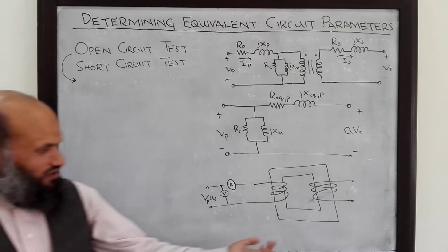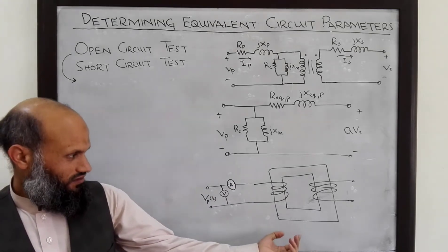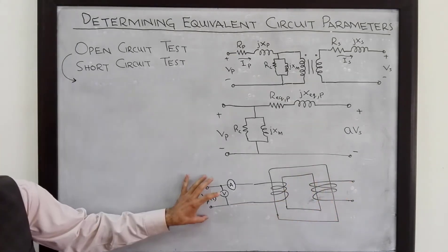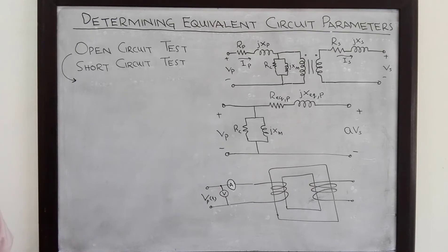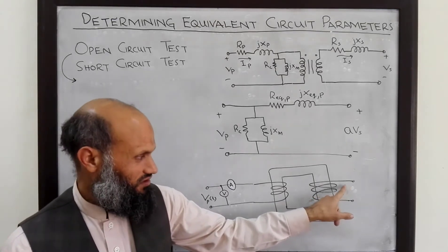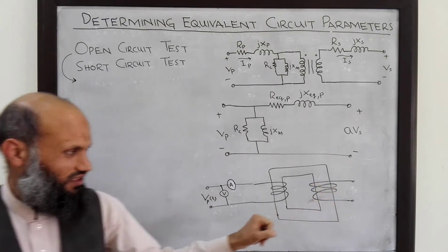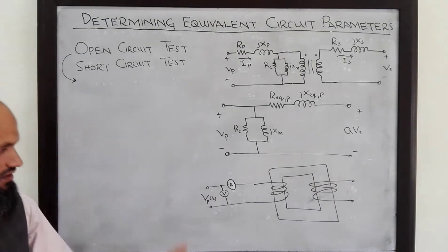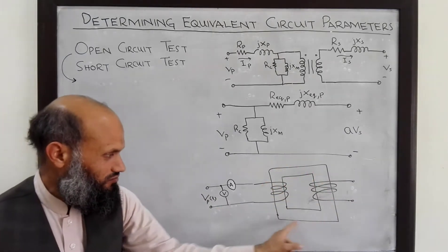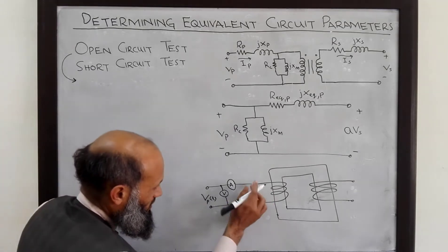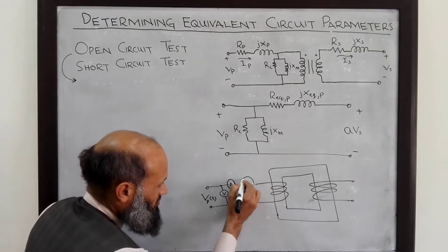An ideal transformer is a lossless device, so if there is no output there is no input power. However, a real transformer is not lossless. Even if the secondary is open circuited — that is, no current is flowing in the secondary winding and no power is transmitted to the secondary — some power will still be consumed in the transformer.